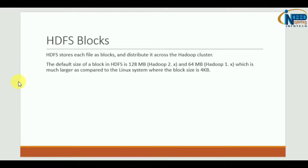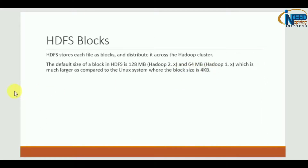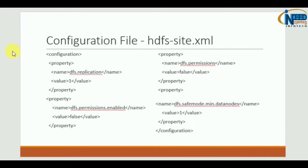Before we see how this is done, note that a Linux filesystem block size is 4 KB, which is very small, whereas the HDFS block size is 64 MB, 128 MB, or any multiple of 64 — which is very large compared to 4 KB.